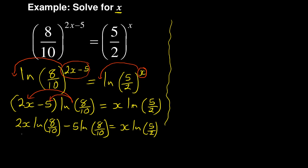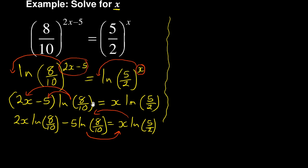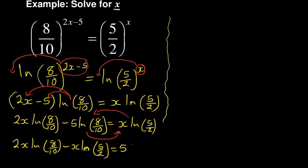I collect like terms: the x terms with ln jump to one side, and the number-only term goes to the other side. So I have 2x·ln(8/10) minus x·ln(5/2) equals positive 5·ln(8/10), because the negative 5 becomes positive when it moves.